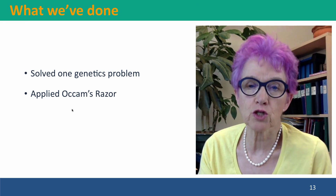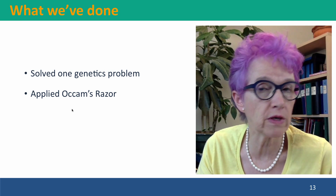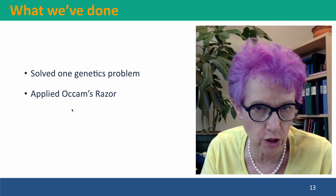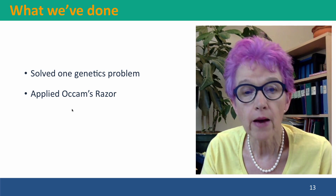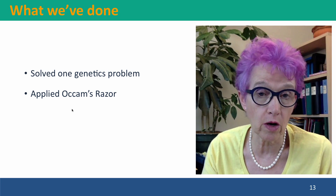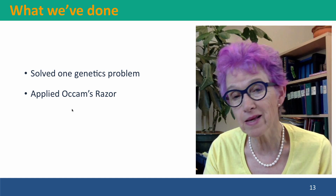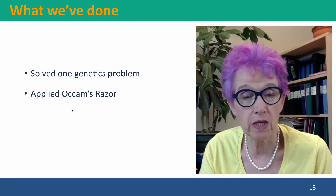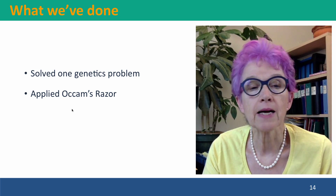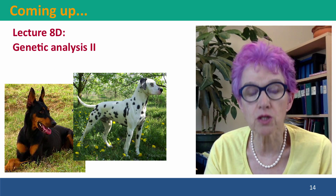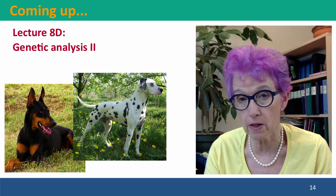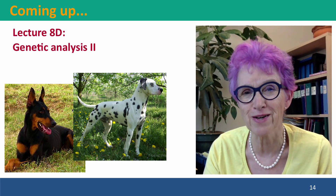So always abide by this principle: make your hypothesis only as complicated as it needs to be to explain your data, and always favor the simplest hypothesis that explains the data. So what we've done so far: I took you through a general strategy for solving genetic analysis problems, applied it to one genetics problem, and then applied Occam's razor to the problem, eliminating the explanations that were more complicated than our data required. Coming up next — and we've still got our Dalmatian — we're now going to do a more complicated problem. I hope to see you there.